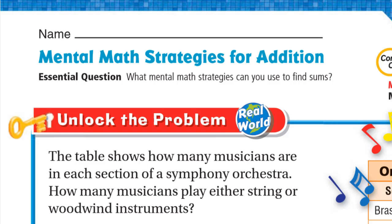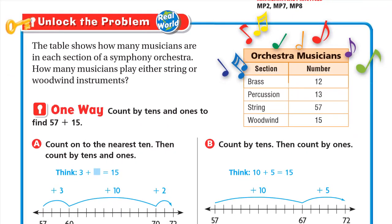Let's unlock the problem. The table shows how many musicians are in each section of a symphony orchestra. How many musicians play either string or woodwind instruments? Who play string are 57 and who play woodwind are 15. So we need to add 57 plus 15.